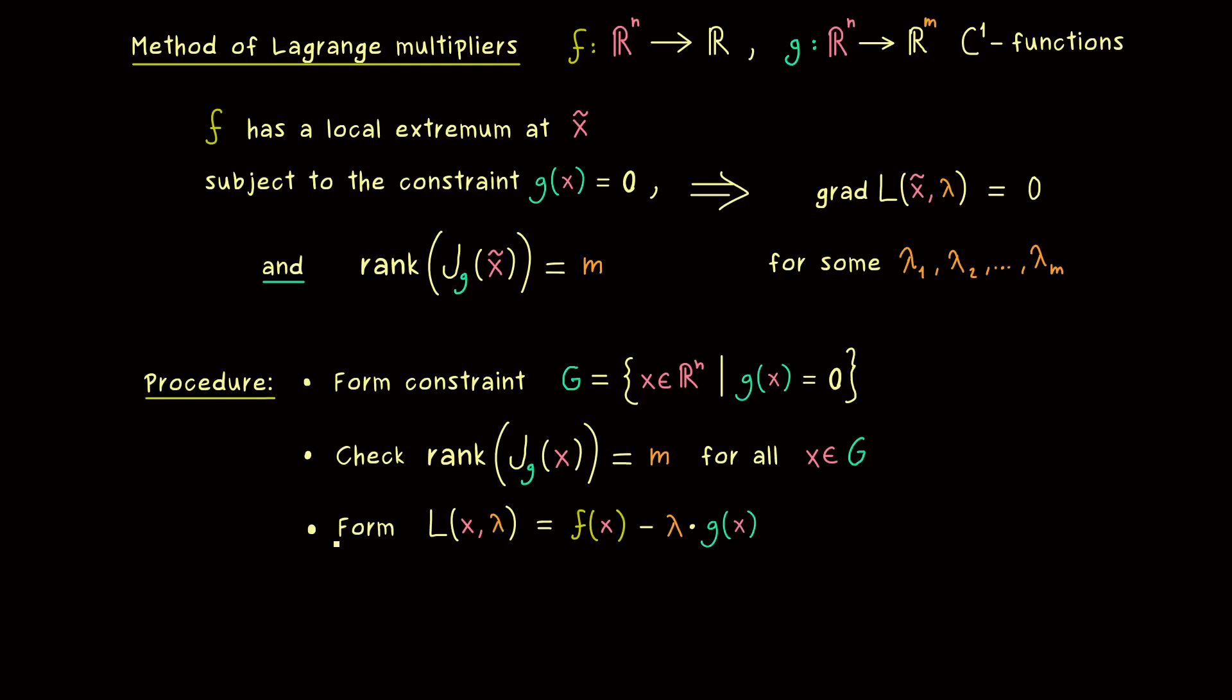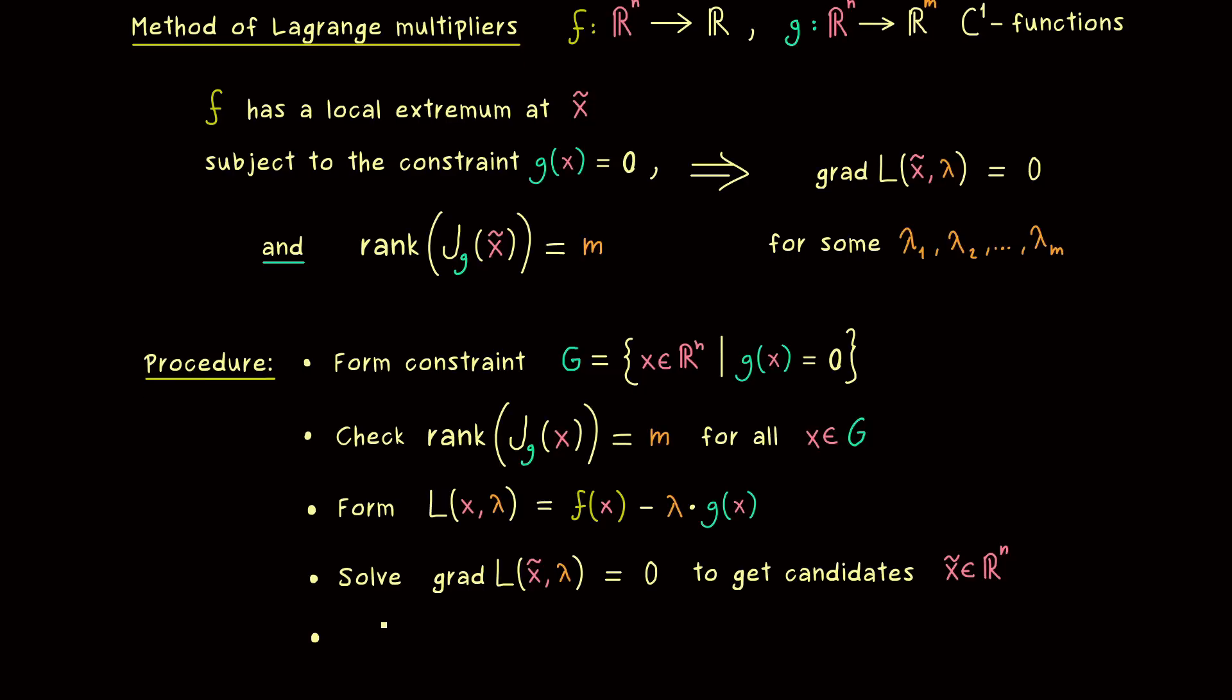The next step would be to form the Lagrangean L. We use the explicit forms of the functions, simplify them as much as we can, and then we have the Lagrangean function L. Then, as we know, we just have to solve the gradient equation for the Lagrangean. In the best case, we get a finite number of candidates x̃ in ℝⁿ. Only at these points can we have local extrema of f subject to the constraint g equals zero.